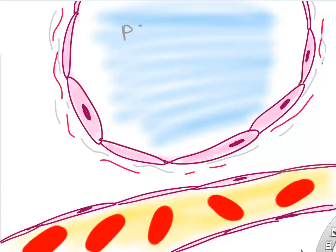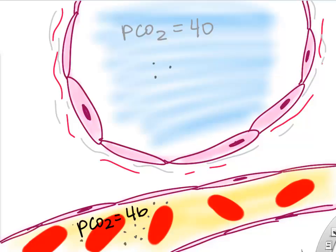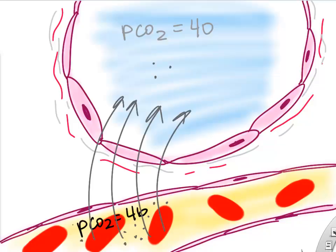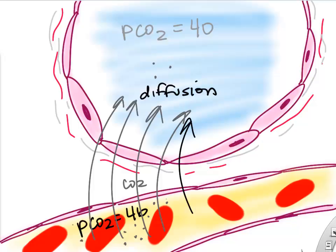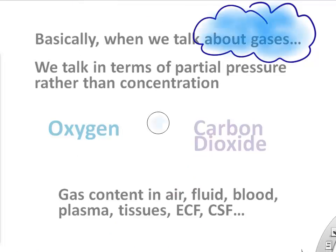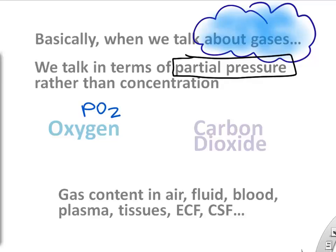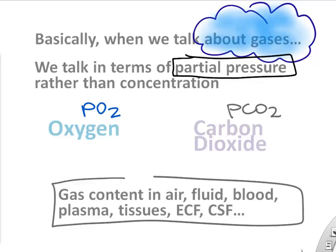If we look at CO2, the partial pressure of CO2 in the alveolar air is actually lower than the PCO2 of the blood entering the lungs. So we have a diffusion gradient from our blood liquid into the alveolar air — that diffusion is the random movement of CO2 molecules from high partial pressure to low partial pressure in the alveolar air. Whenever we talk about gases, rather than talking about concentrations, we'll just talk about partial pressures. Partial pressure of oxygen is PO2, partial pressure of carbon dioxide is PCO2.